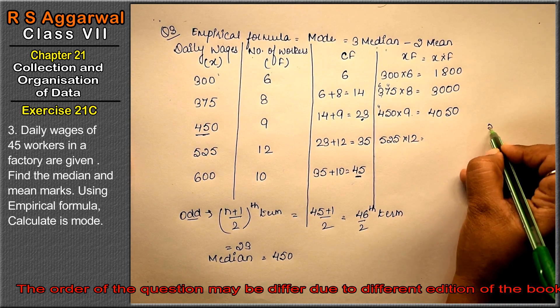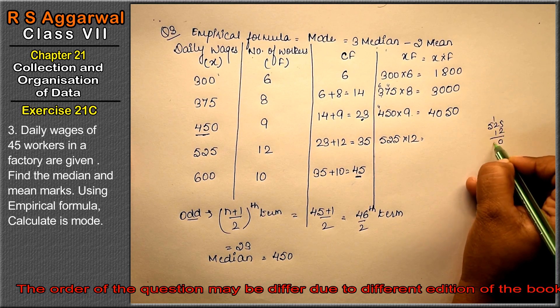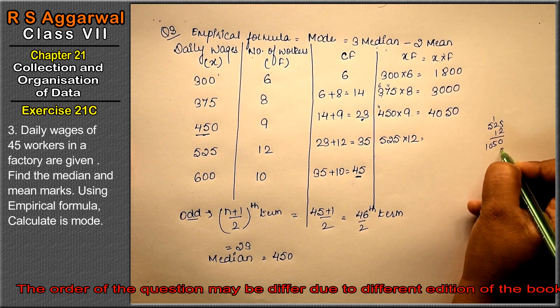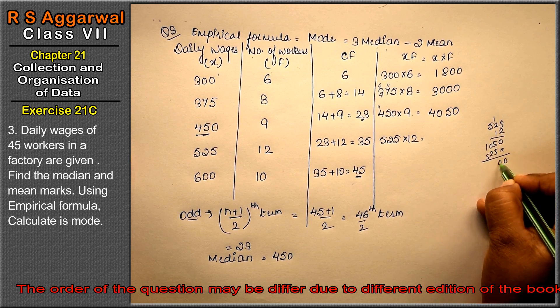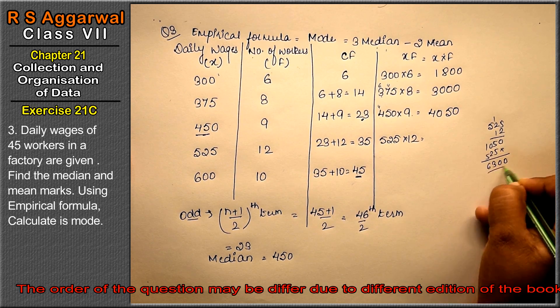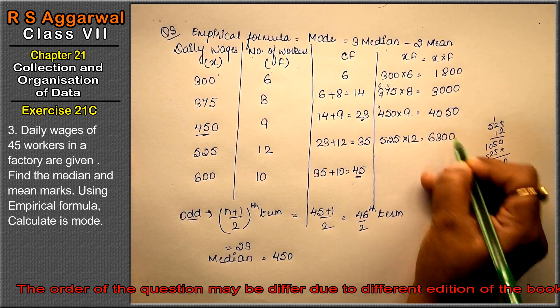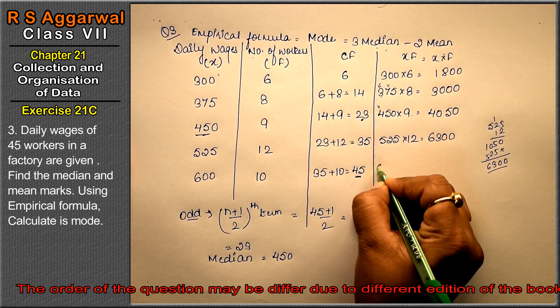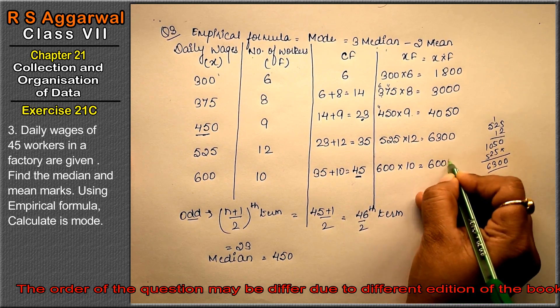Next is 525 into 12. Let's see in the rough: 525 into 12, 2 fives are 10, 2 twos are 4 and 5, 2 fives are 10. So it's 0 carry 1, 3 and 6, that is 6300. Now 600 into 10, that is 6000.